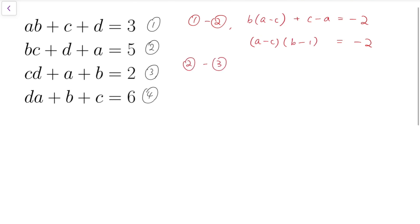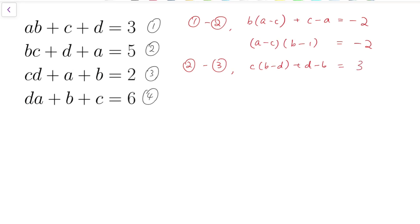Then doing similar things on the next two equations, 2 and 3, I will have c times b minus d plus d minus b equals 3. So again, factoring, we have b minus d times c minus 1 equals 3.